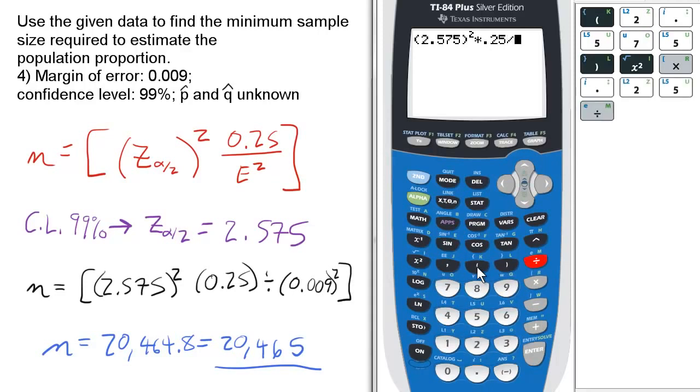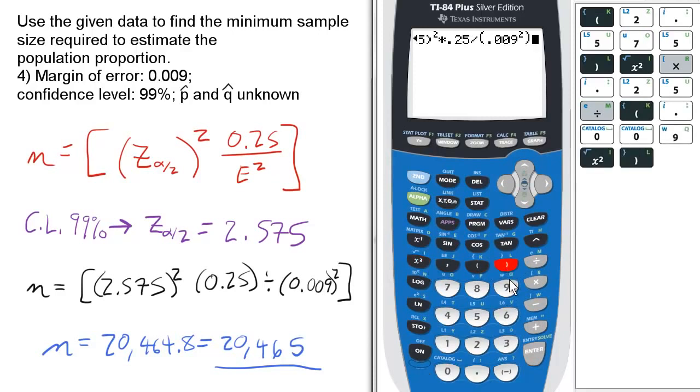This is divided by, and then definitely parentheses here, 0.009 squared. I'd put that within the parentheses, and then enter.